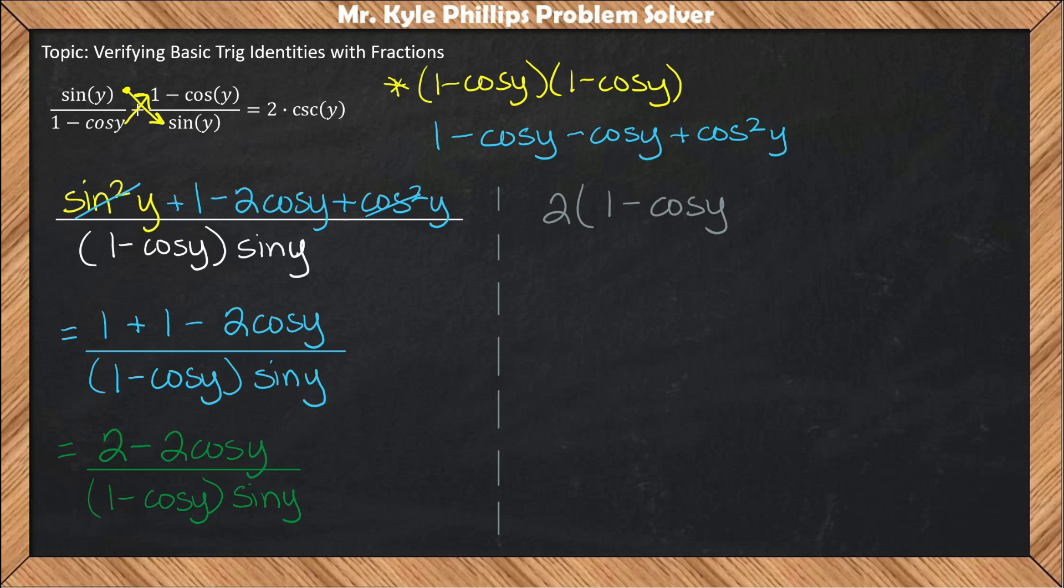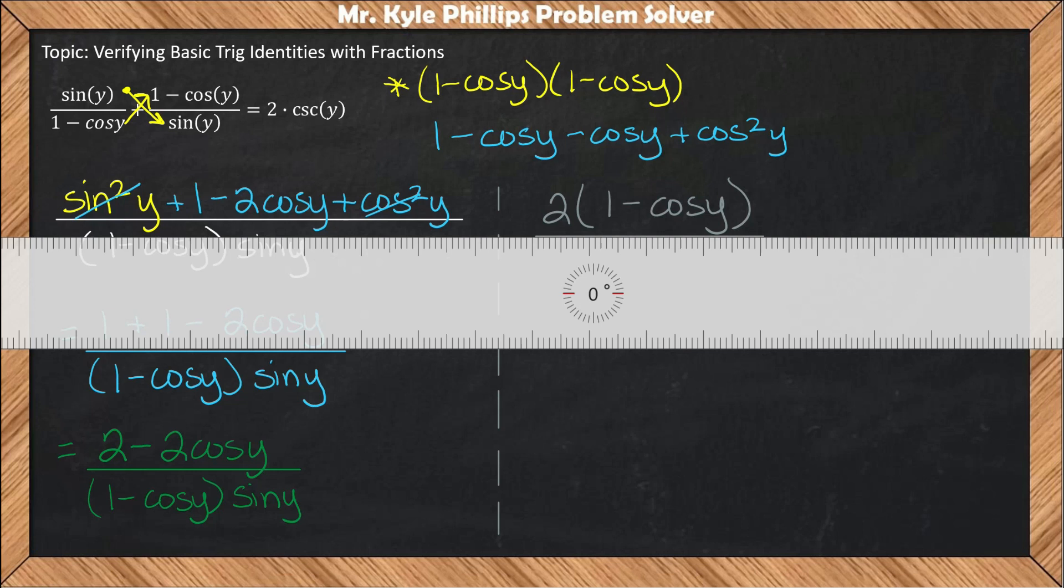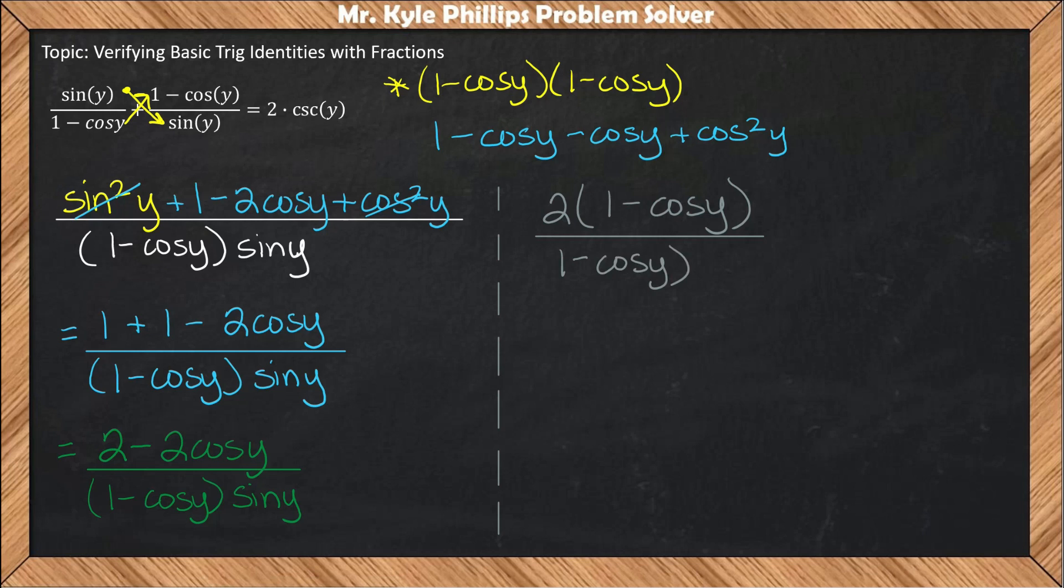So we're going to try that. When we factor that out we get 2 times 1 minus cosine y, and we have that over our denominator of 1 minus cosine y times sine y.